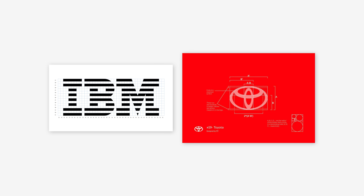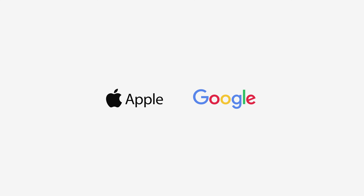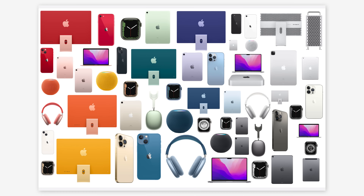Swiss design has played a crucial role in shaping the corporate identity of many global brands. Companies like Apple and Google have adopted the clean, minimalist aesthetics and functional principles of Swiss design to create their visual identities. Apple, known for its sleek and user-friendly products, has embraced the Swiss design ethos in both its hardware and software designs.